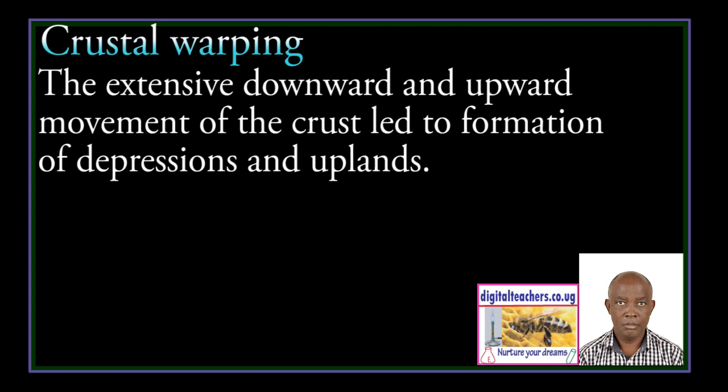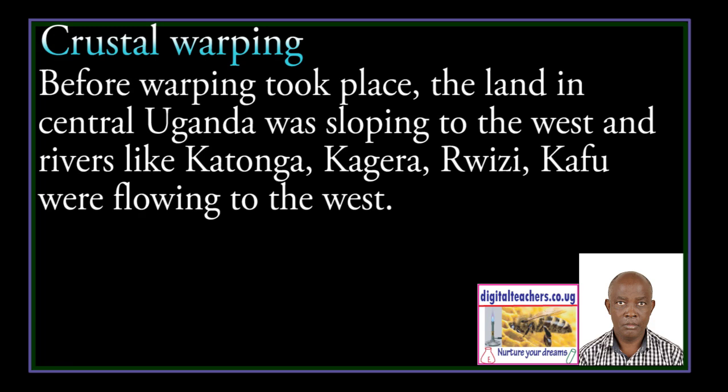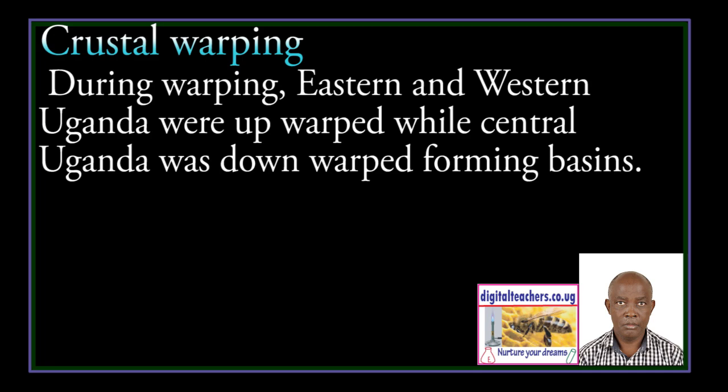Coastal Warping. The extensive downward and upward movements of the crust led to the formation of depressions and uplands. Down-warping occurred in central and south-eastern Uganda to form depressions occupied by Lake Victoria, Lake Kyoga, Lake Wamala, and Lake Nabivali. Before warping took place, the land in central Uganda was sloping to the west, and rivers like Katonga, River Kagera, and River Ridge were flowing to the west. During the warping, the eastern and western Uganda were upwarped while the central Uganda was downwarped, forming basins.